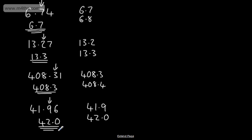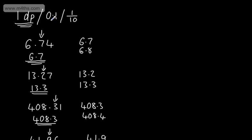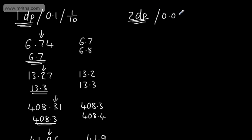So that's rounding to one decimal place, or the nearest 0.1, or the nearest one tenth. If we now look at 2dp — two decimal places — we're rounding to the nearest 0.01, or the nearest one one-hundredth.